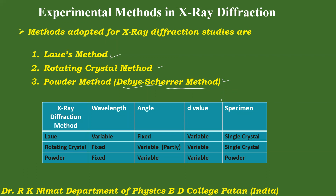In the Laue method, a single crystal is held stationary and a beam of continuous X-rays is made incident on it at a fixed glancing angle θ. Thus θ is fixed and λ varies. Different wavelengths present in the continuous X-ray spectrum select the proper reflecting plane from among the large number of crystal planes such that Bragg's condition is satisfied. This technique is called the Laue technique.